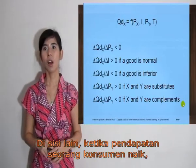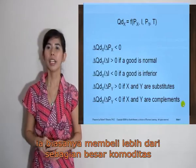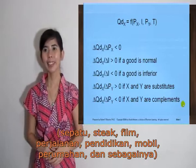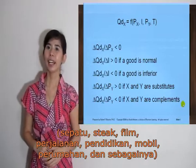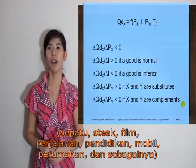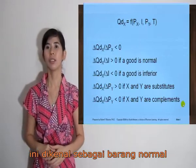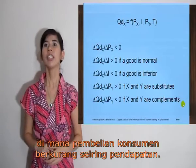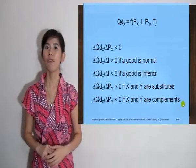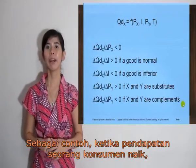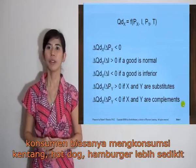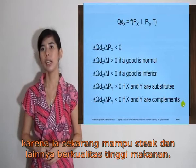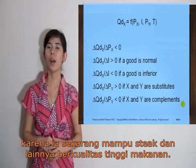On the other hand, when the consumer's income rises, he or she can afford to purchase more commodities — shoes, steaks, clothing, travel, education, automobile, housing, and so on. These are known as normal goods. There are some goods and services, however, on which the consumer spends less as income rises. For example, when the consumer's income rises, the consumer usually consumes fewer potatoes, hot dogs, and hamburgers, because he or she can now afford steaks and other higher quality goods.